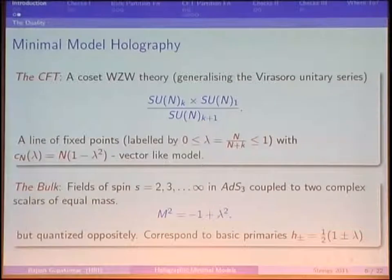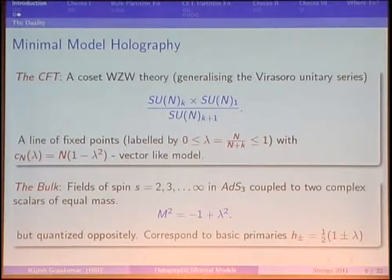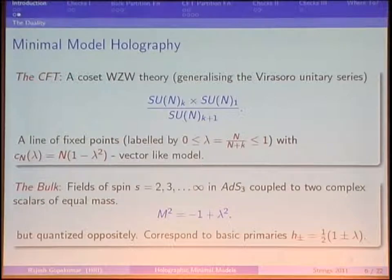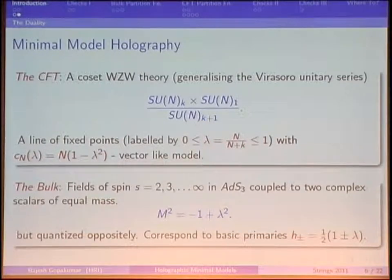The bulk dual is a proposal to consider fields of spin 2 up to infinity — the Vasiliev higher spin tower in AdS_3 — but coupled in addition to two complex scalars with equal masses. The masses are parameterized to relate to the λ in the field theory. Since λ is a parameter between 0 and 1, these masses lie within the window where you can quantize them in one of two ways, corresponding to primaries in the CFT with dimensions H± = ½(1 ± λ), their sum adding up to one.